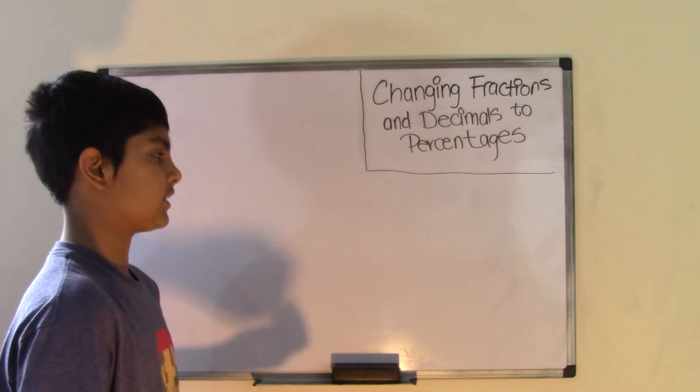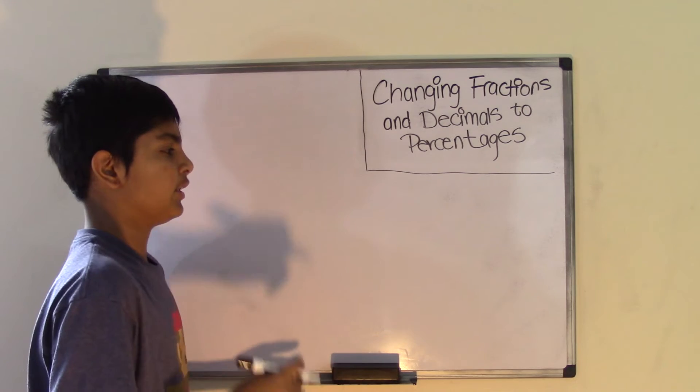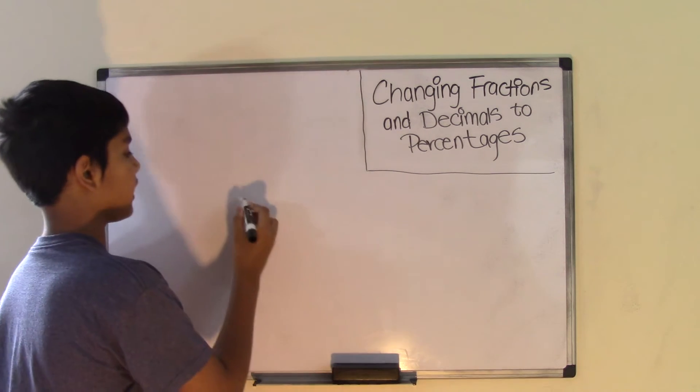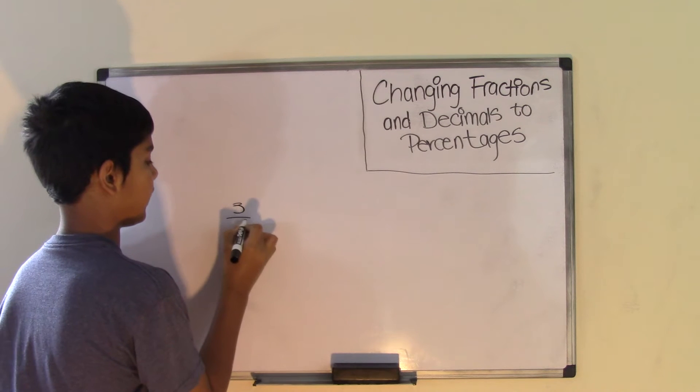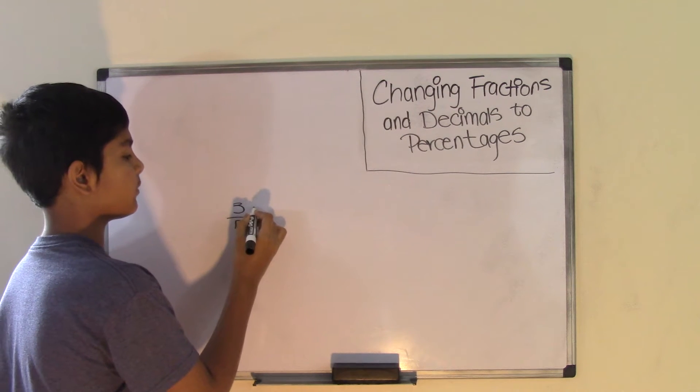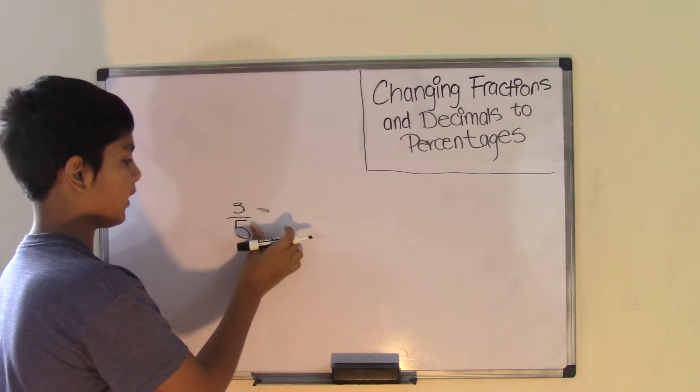So what are fractions? Well, fractions are a number on top of another number to resemble a part of something. So let's say we have the fraction 3 over 5. The 3 is the numerator, the number on top, and then the 5 is the denominator, the number on the bottom.